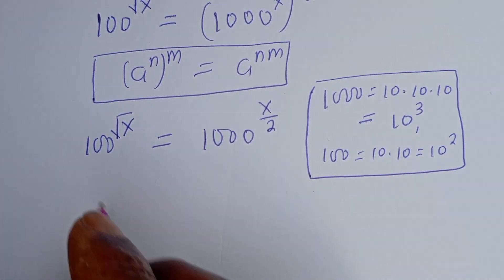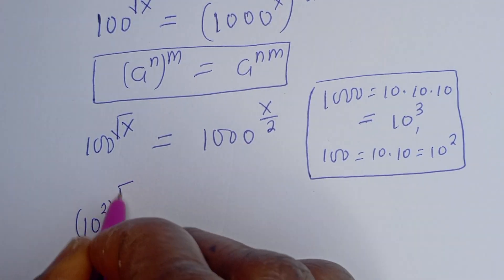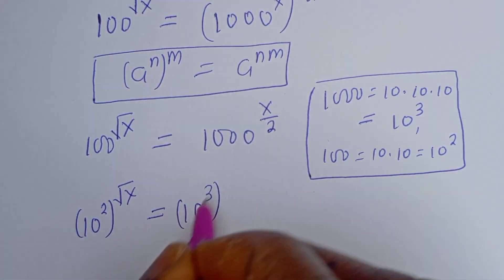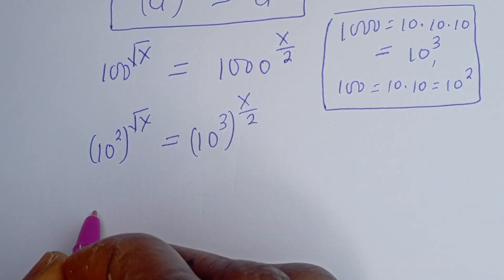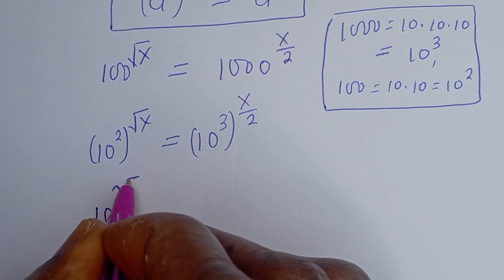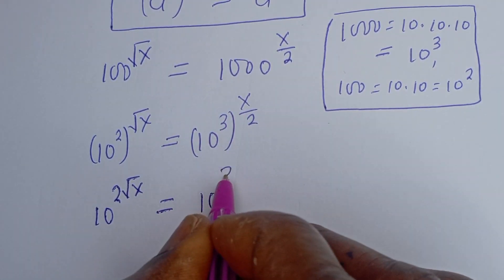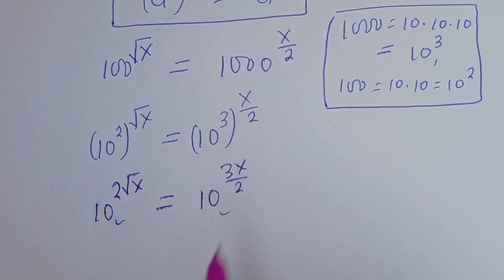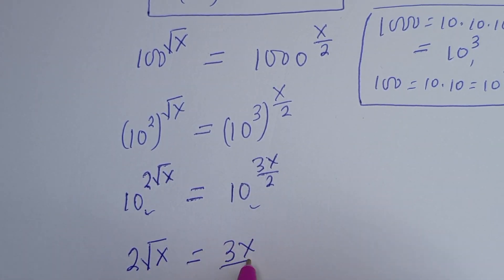So here we have 10 squared to the power of square root of s is equal to 10 to the power of 3, to the power of s over 2. This gives us 10 to the power of 2 times square root of s is equal to 10 to the power of 3s over 2. Then, because of the same base, we equate the exponents: 2 times root s is equal to 3s over 2.